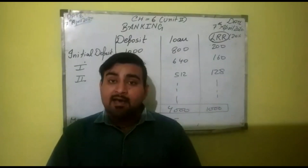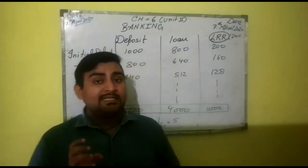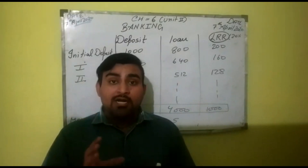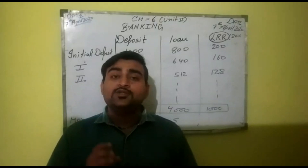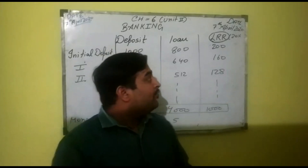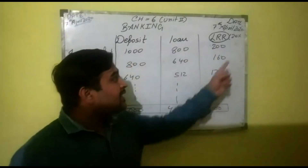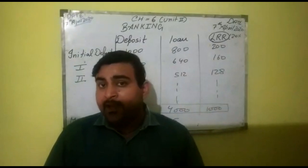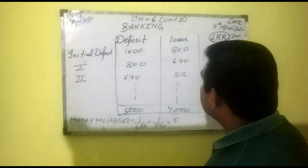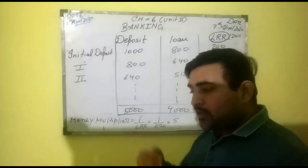LRR has two parts — CRR and SLR. CRR means some percentage of total deposits is kept with RBI, which is called CRR. And some percentage of total deposits the bank keeps with itself, which is called SLR — Statutory Liquidity Ratio. The sum total of both CRR and SLR is our LRR. Let us assume LRR is 20%. It means if we deposited 1000 crore rupees in the bank, the bank keeps 200 as reserve and can give only 800 as loan.